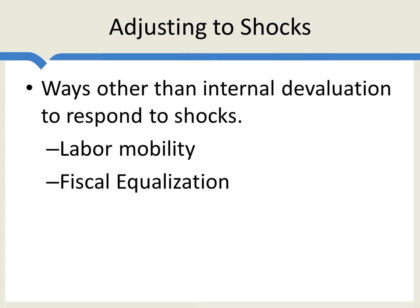One way of responding to a shock is internal devaluation — a reduction in wages and prices. That response can be ameliorated or spread out through other means, such as labor mobility. So if wages have to fall in one part of the common currency area, a way of spreading that shock out is for workers to move from where wages are low to where wages are high. Despite their best efforts, labor mobility in the European Union still remains relatively low.